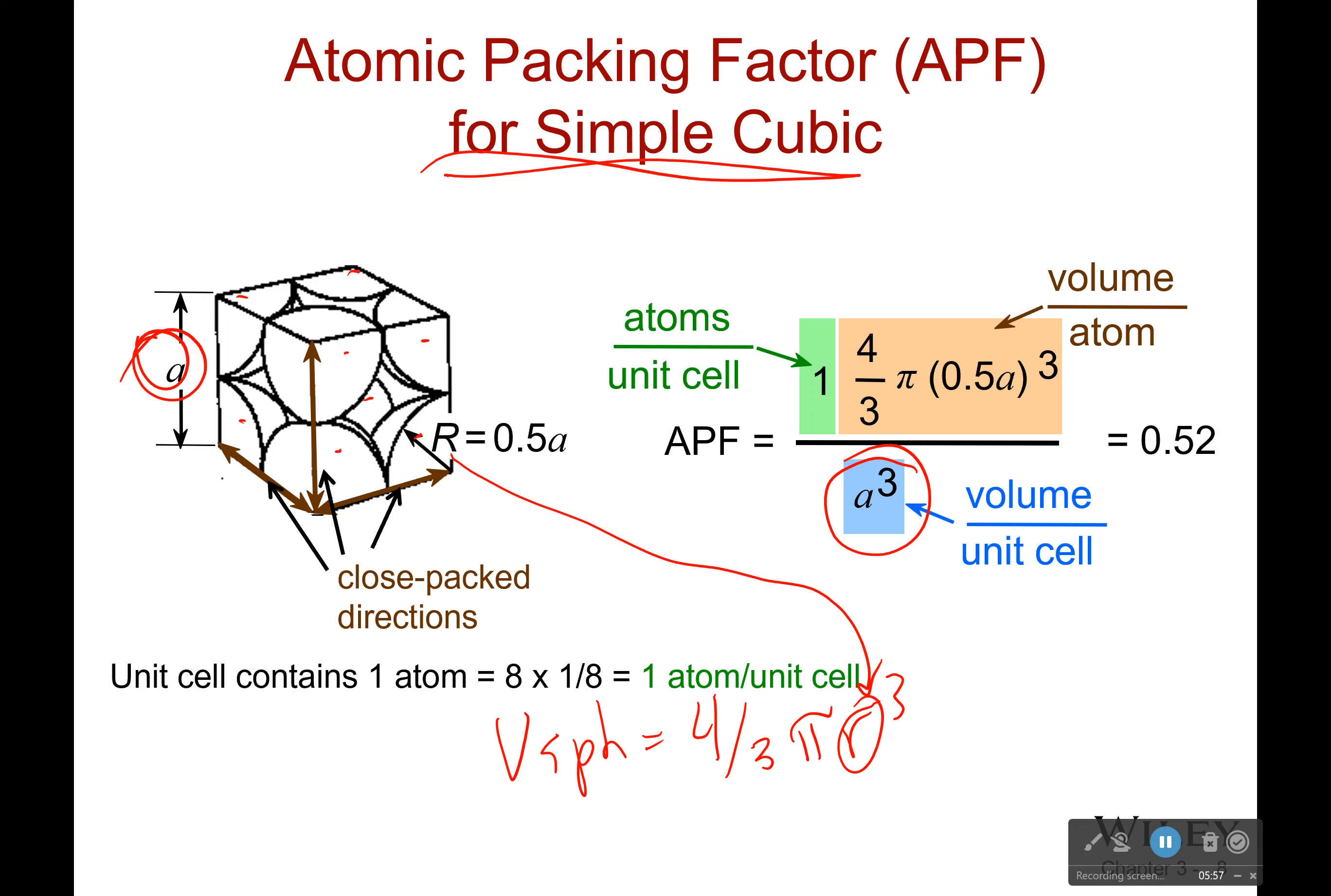Now that I know what the radius is, I simply plug what I got right here. I put it back into my equation. And as you can see, I can then cancel these A cubed is going to cancel and I'll be left with 0.52, which is very, very low.